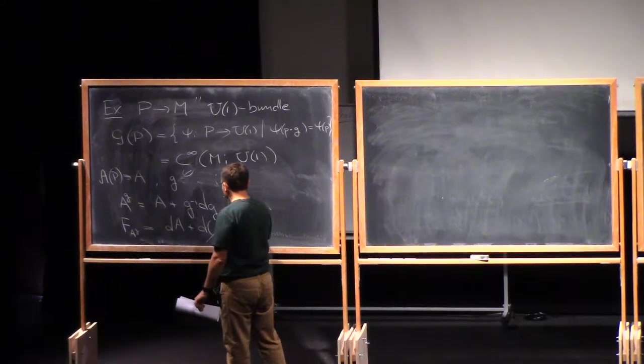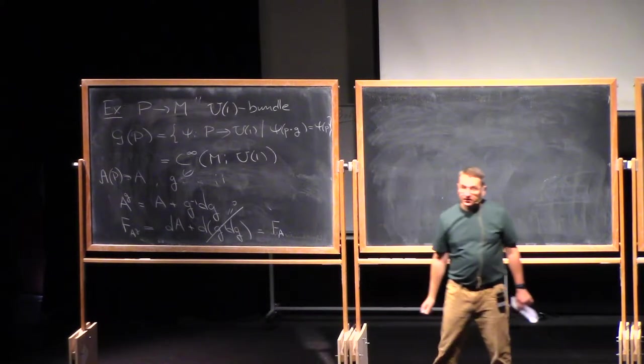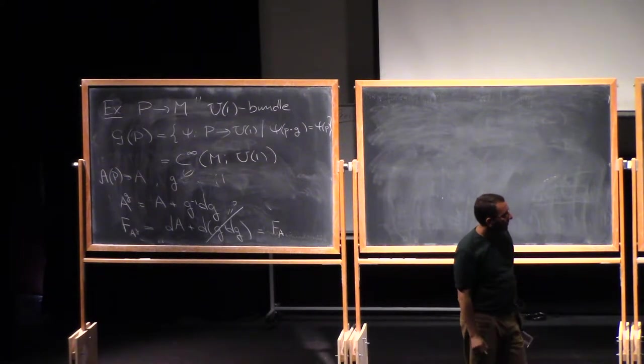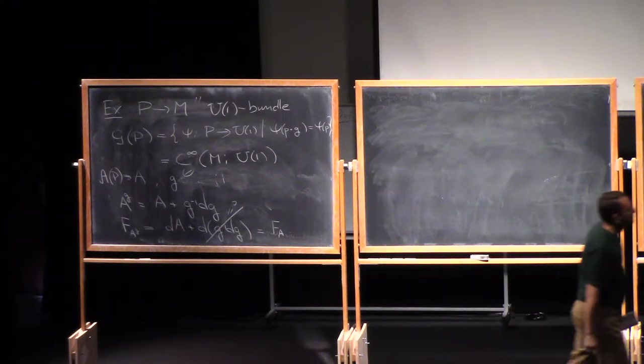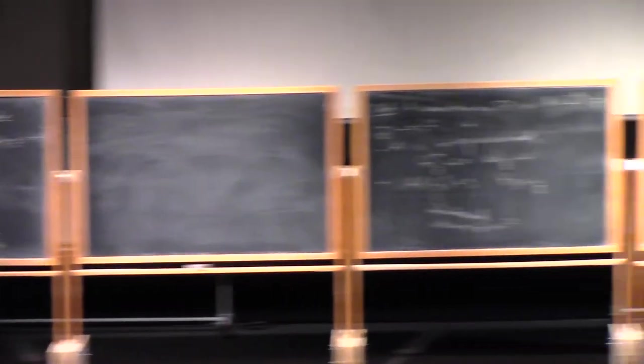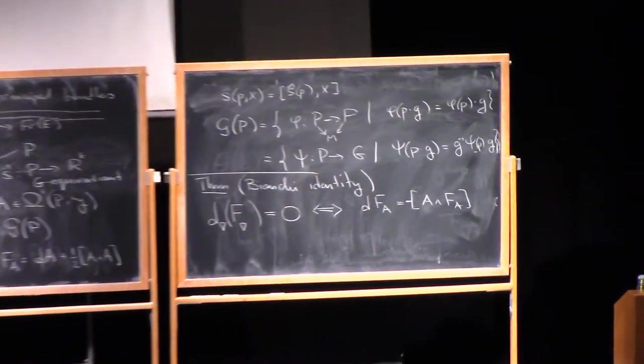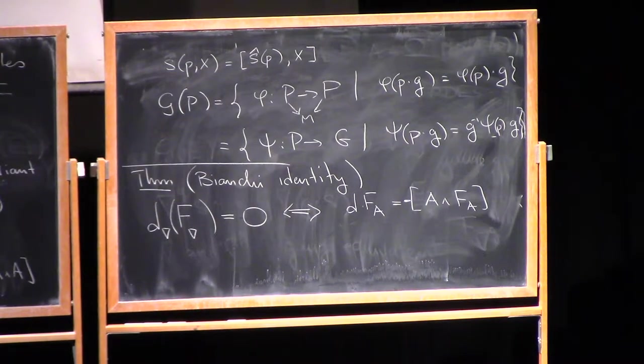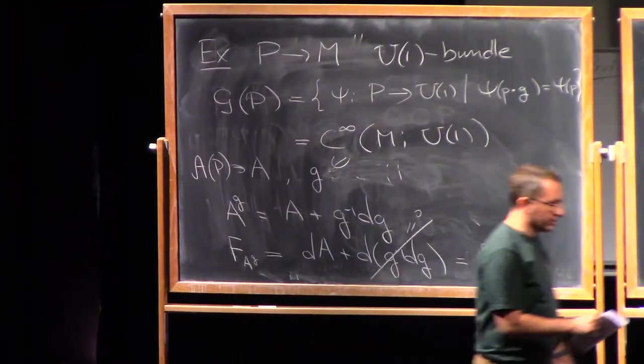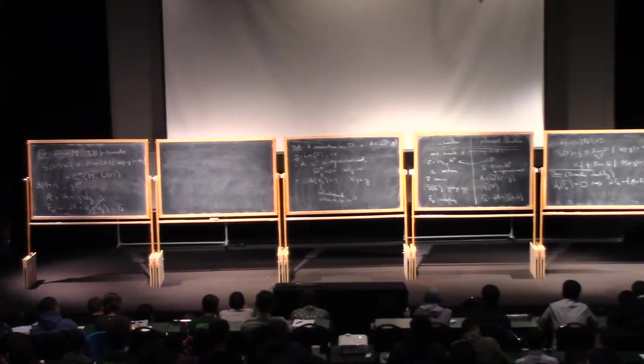But this is closed, so this vanishes, and we have F_A. In other words, what we see is that in the abelian case, the curvature actually is independent of the gauge transformation. Are there any questions to that?